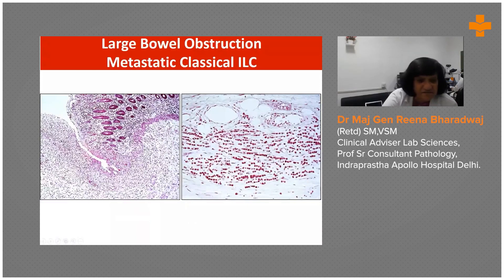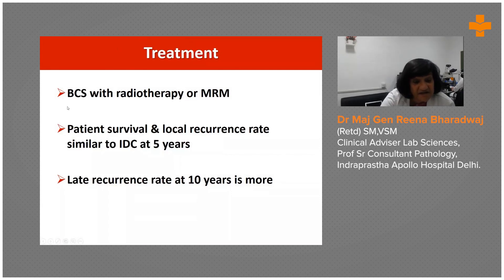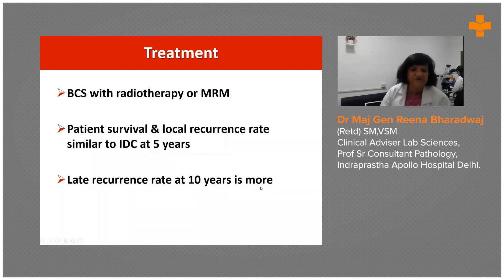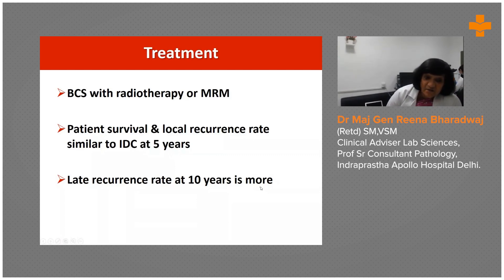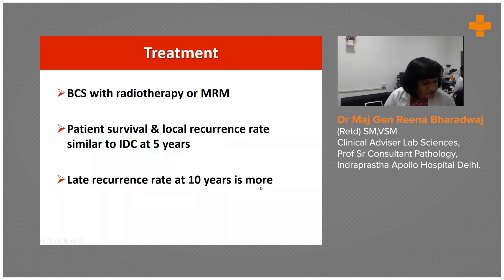This is a colonic mucosa with the submucosal region showing classical metastatic infiltrative lobular carcinoma. Treatment can be either breast conservation or modified radical mastectomy with or without radiotherapy. Survival and local recurrence rates are similar to infiltrating duct carcinoma depending on TNM stage, and recurrence rates can be as late as 10 years or more. This concludes the coverage of the entire spectrum of ALH, LCIS, and ILC with all subtypes, their mimics, and the role of immunohistochemistry.